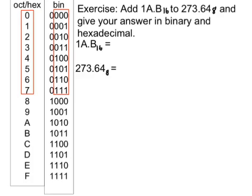Because we're asked for the answer in binary, I'm going to first convert the two numbers into their binary equivalent. For the hexadecimal number, I replace each digit with its four-digit binary equivalent: 1 is 0001, A is 1010. Put in the fractional point, and B is 1011, base 2. These first three zeros won't affect the size of the number if we remove them.